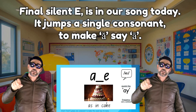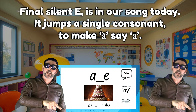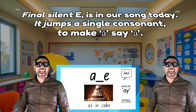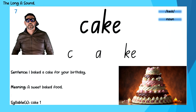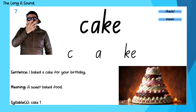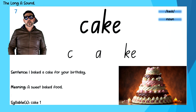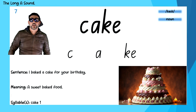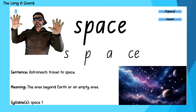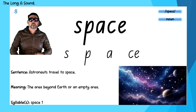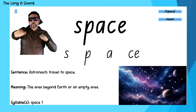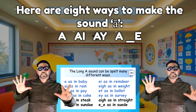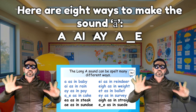It jumps a single consonant to make A say A. Cake — C-A-K-E. Space — S-P-A-C-E.